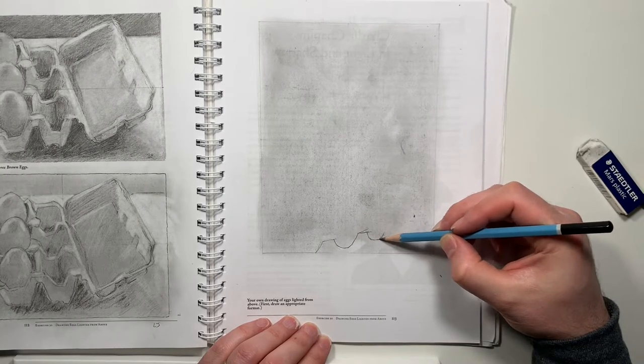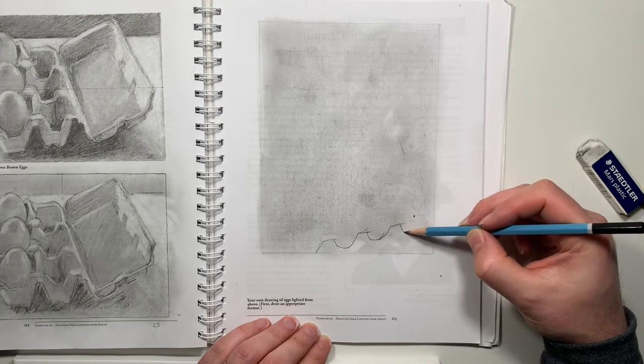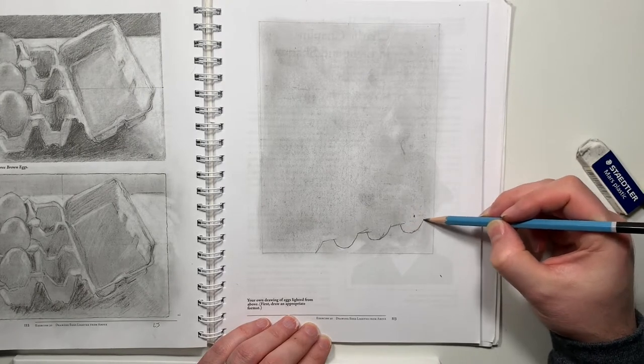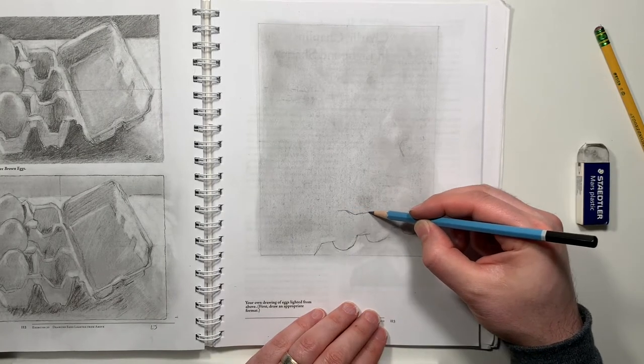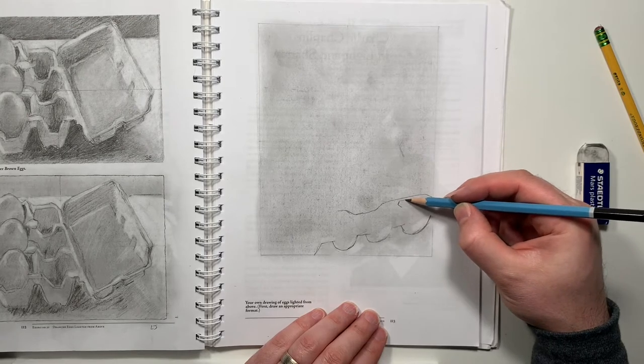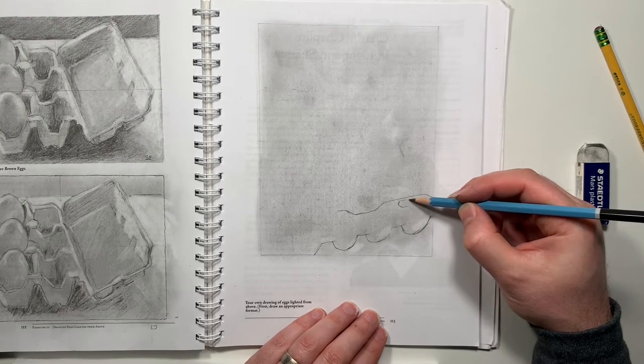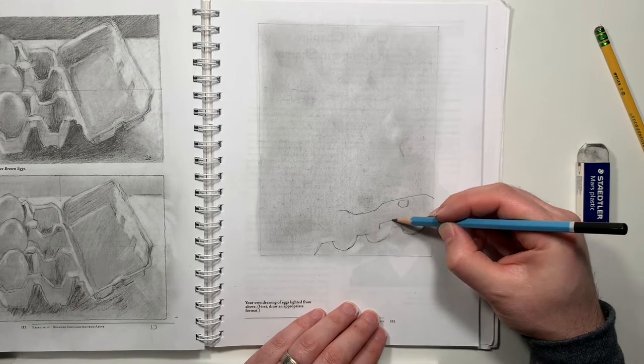Once you've done the copy of the drawing, you're supposed to move on to drawing from real life. So I got a few eggs in a carton, set them out, and lit them with the same light that I use for the videos - two overhead lamps coming from the left shining down onto the eggs.